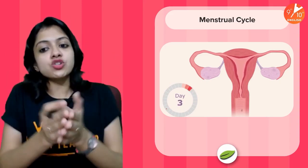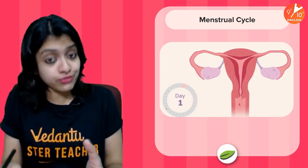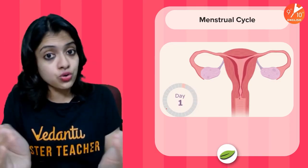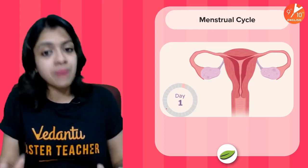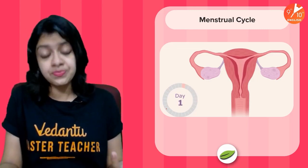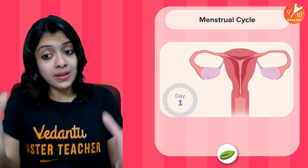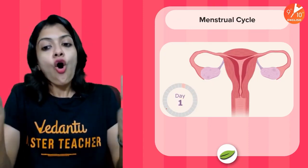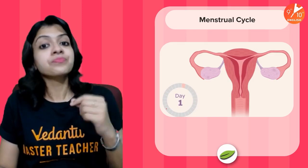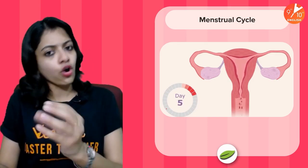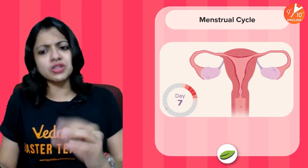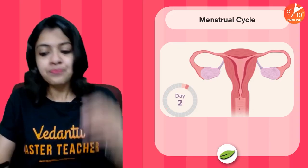If the ovum is not fertilized, it gets released out of the female reproductive tract through the vagina in the form of blood. Menstrual fluid is comprised of the unfertilized egg along with the inner lining of the uterus — the endometrial lining — which is formed fresh every month. The endometrial lining, along with the unfertilized ovum, some mucus, and blood vessels, all shed and break down together and move out as menstrual fluid. This roughly occurs every 28 days, and the duration of one round of menstruation is anywhere between two to seven days.